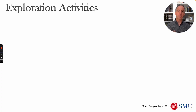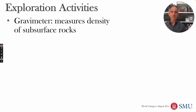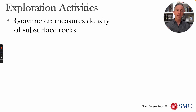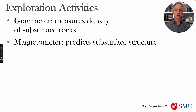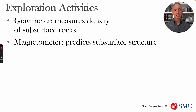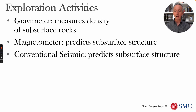First, let's talk about exploration activities used to discover if there's oil and gas on a particular property. There are a lot of different ways to look for oil and gas. You can use a gravimeter, which measures the density of subsurface rocks, or a magnetometer, which predicts subsurface structures based on the magnetism of those rocks.